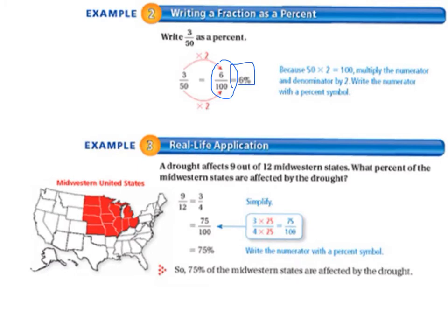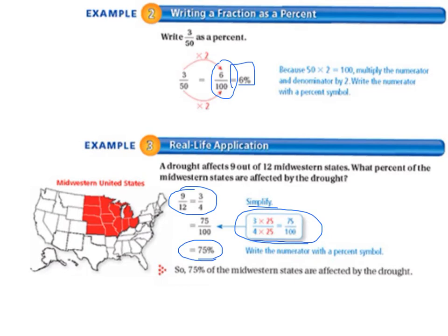Finally, we have our real-life application. Example 3: a drought affects 9 out of 12 Midwestern states. What percent of the Midwestern states are affected by the drought? So 9 twelfths equals 3 fourths — we simplified the fraction. Then we make the denominator equal 100 by multiplying the numerator and denominator by 25, as shown in the blue box. That equals 75 one-hundredths, which equals 75 percent. So 75 percent of the Midwestern states are affected by the drought.